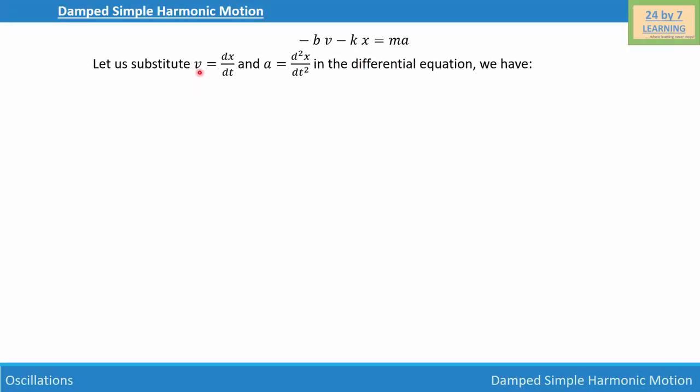Now let's substitute v = dx/dt and a = d²x/dt² in the differential equation. We have: m(d²x/dt²) + b(dx/dt) + kx = 0. This is the acceleration, this is the velocity, and this plus kx equals 0.